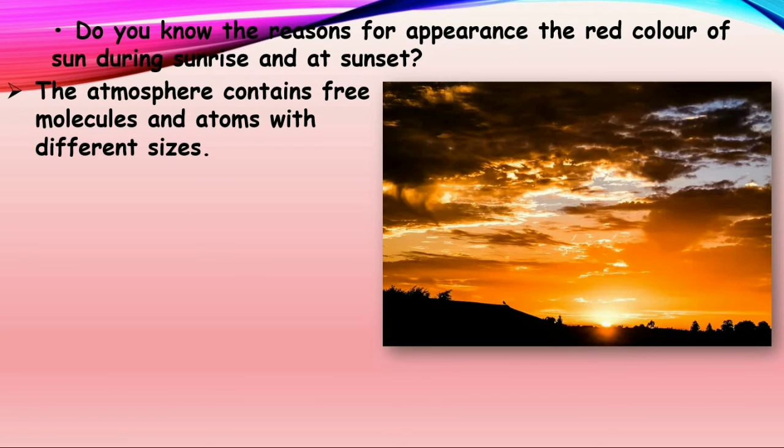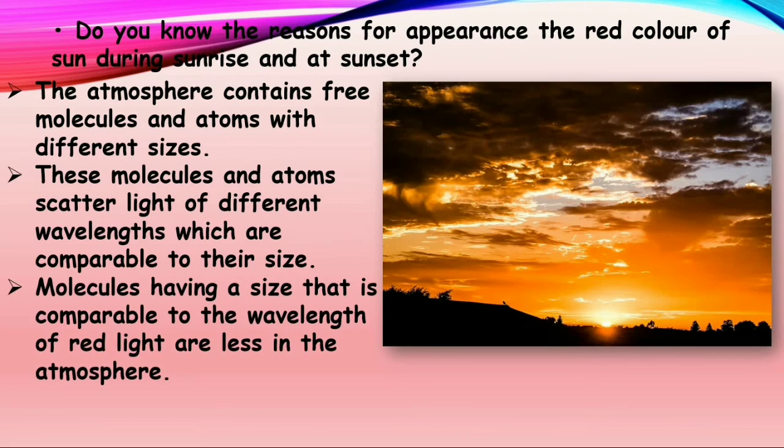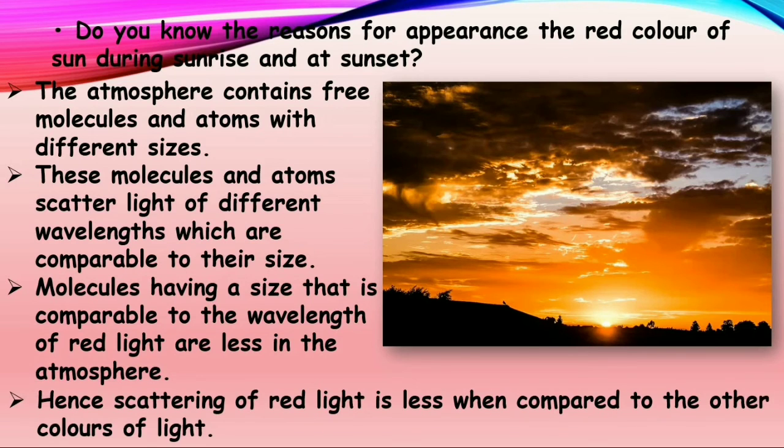The atmosphere contains free molecules and atoms with different sizes. These molecules and atoms scatter light of different wavelengths which are comparable to their sizes. Molecules having a size that is comparable to the wavelength of the red light are less in the atmosphere. Hence the scattering of red light is less when compared to the other colors of light.